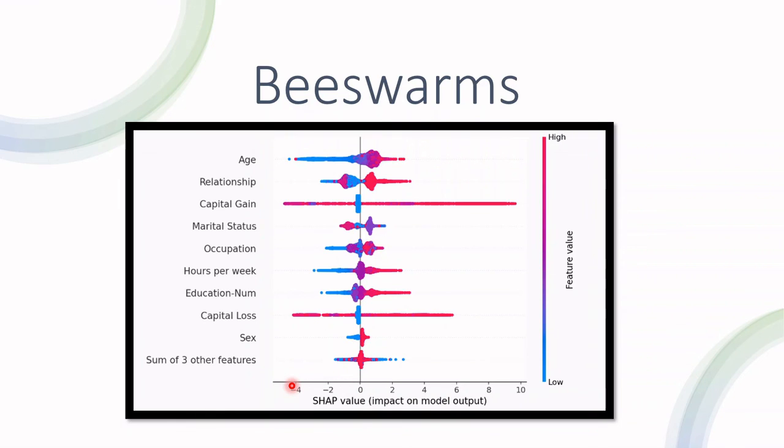The beeswarm plot here helps us understand which features are more or less important for the model. Let's take a look at age, for example. We have the feature value low, meaning low age, younger people, and high, meaning higher age and older people.